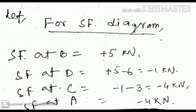Now for the shear force diagram: SF at B equals plus 5 kilo newtons in the upward direction. SF at D equals plus 5 upward minus 6 downward, so the summation is plus 5 minus 6 equals minus 1 kilo newton in the downward direction. SF at C equals minus 1 at D minus 3 at C, which gives minus 1 minus 3 equals minus 4 kilo newtons.